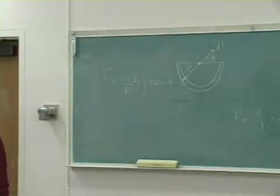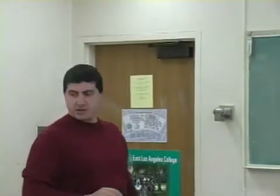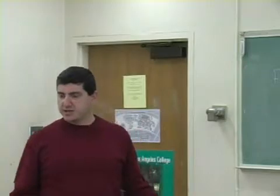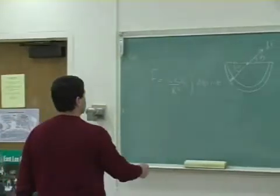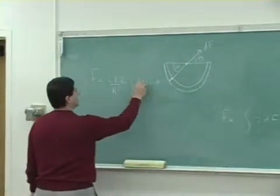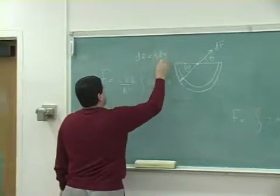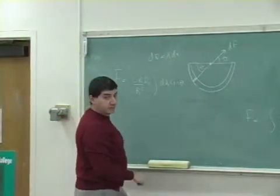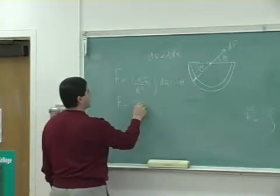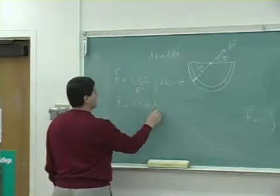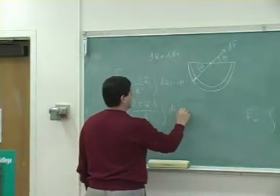Next, express dq as λ·dx, where λ is the linear charge density and dx is the length of the small piece. Since the charge is uniform, λ comes out of the integral. So we have: 2k·q₂·λ/r² times the integral of dx·sinθ.